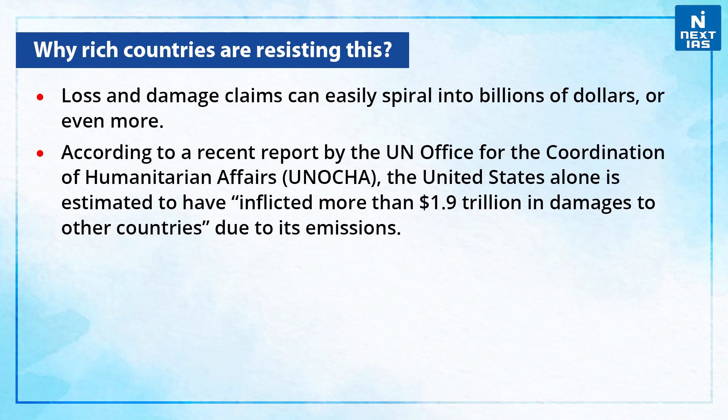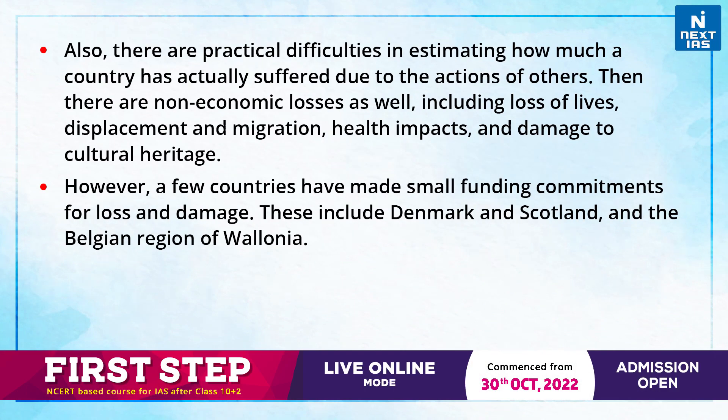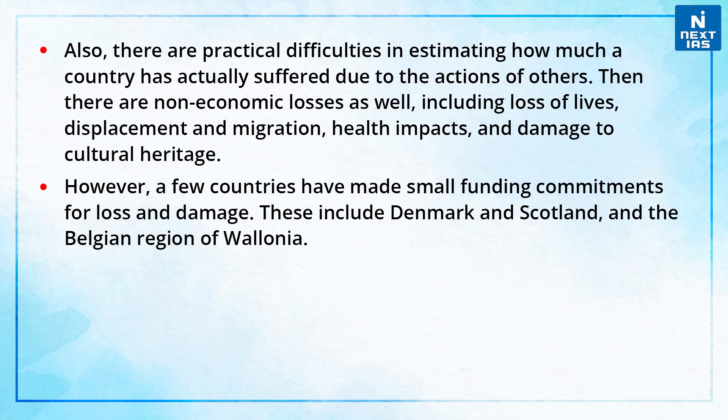The question is: why are rich countries resisting this? First, loss and damage claims can easily spiral into billions of dollars or even more. According to a recent report by the UN office, the United States alone is estimated to have inflicted more than $1.9 trillion in damages to other countries due to its emissions. There are also practical difficulties in estimating how much a country has actually suffered due to actions of others. Then there are non-economic losses as well, including loss of lives, displacement and migration, health impacts and damage to cultural heritage.